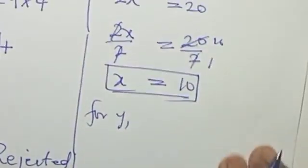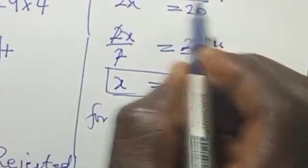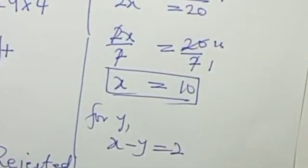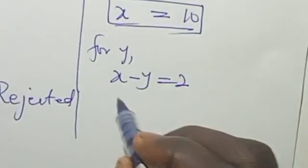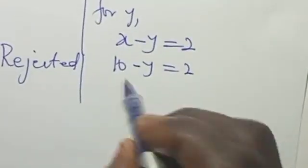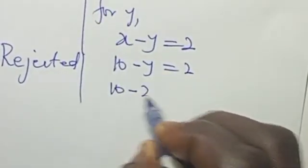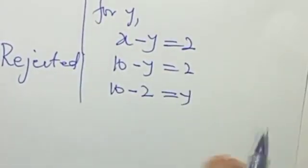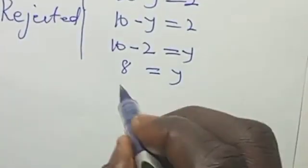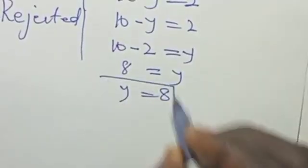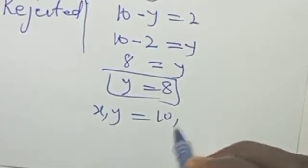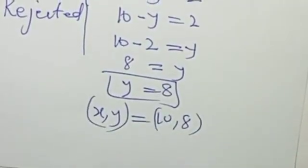For y, we can use this equation that says x-y = 2. Now, we have x as 10, so we say 10-y = 2. And we can say 10-2 equals to y. So 8 equals y. Or y equals 8. So x, y equals 10 and 8.